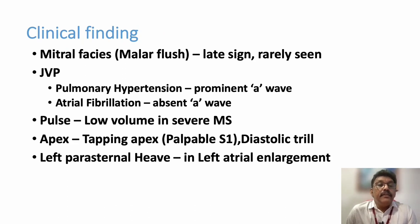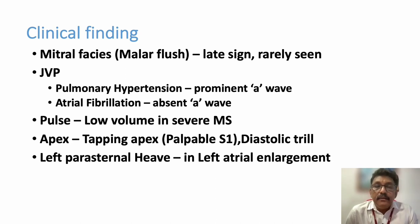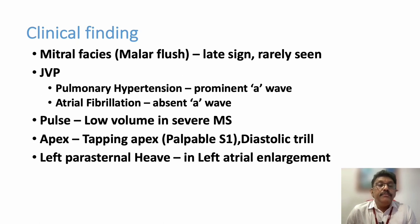Other clinical findings in mitral stenosis include malar flush, which is not very common nowadays because treatment occurs early — it is a late sign. Jugular venous pulsation is elevated because the increased pressure in the pulmonary circulation raises pressure in the right atrium and right ventricle, producing different waves in JVP. Pulmonary hypertension produces prominent 'a' waves; atrial fibrillation produces absent 'a' waves.